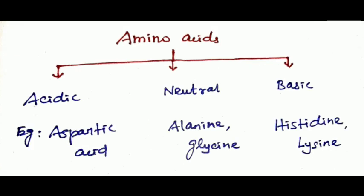Amino acids can be classified into three types based on the presence of amine and carboxyl groups. First type: acidic amino acids, where carboxyl group is greater than amine group. For example, aspartic acid. Second type: neutral amino acids, where amine group and COOH group are equal. For example, alanine and glycine. Third type: basic amino acids, where there are more NH2 groups than COOH groups. For example, histidine and lysine.